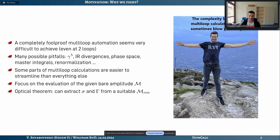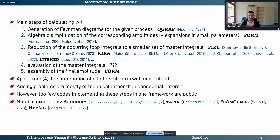I'd like to focus on the evaluation of the so-called bare scattering amplitude M, because using the optical theorem we can extract quantities we're mostly interested in from this renormalized amplitude — namely cross-sections and decay rates. Let me now become a bit technical about how we try to calculate this object.